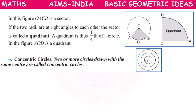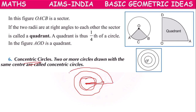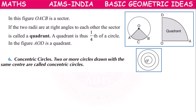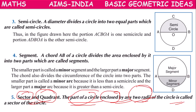Next we have another term called concentric circles. If we draw circles with the same center point but with different radii — first a small circle, then a larger one, then an even larger one — all these circles share the same center O. So they are called concentric circles.